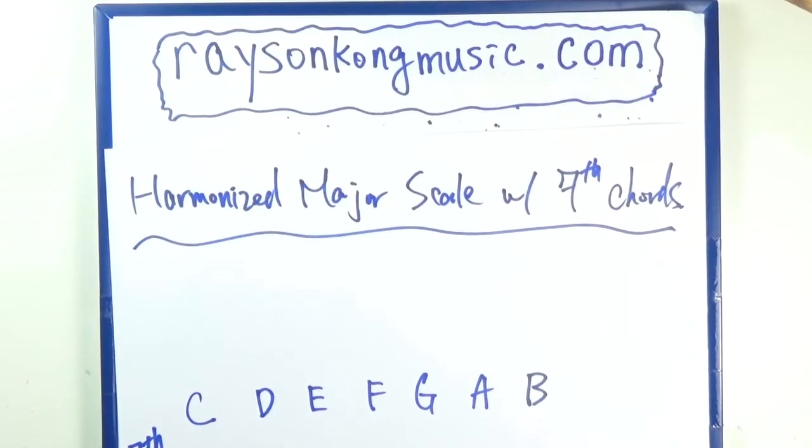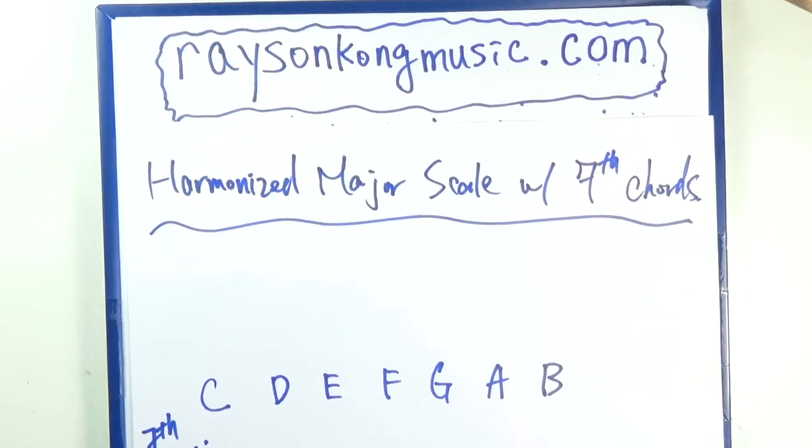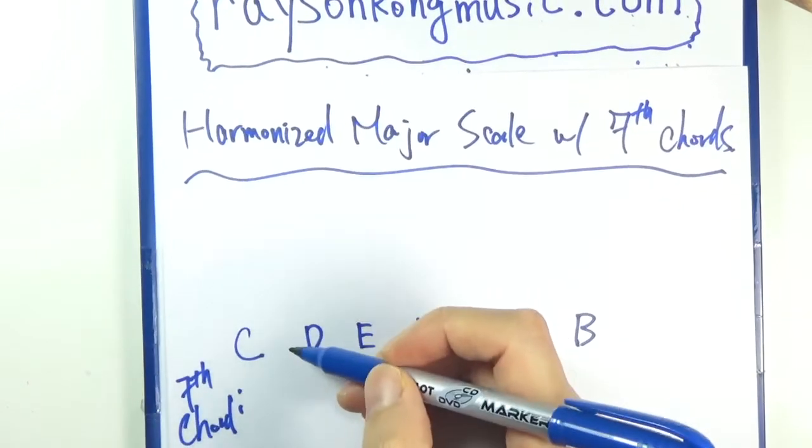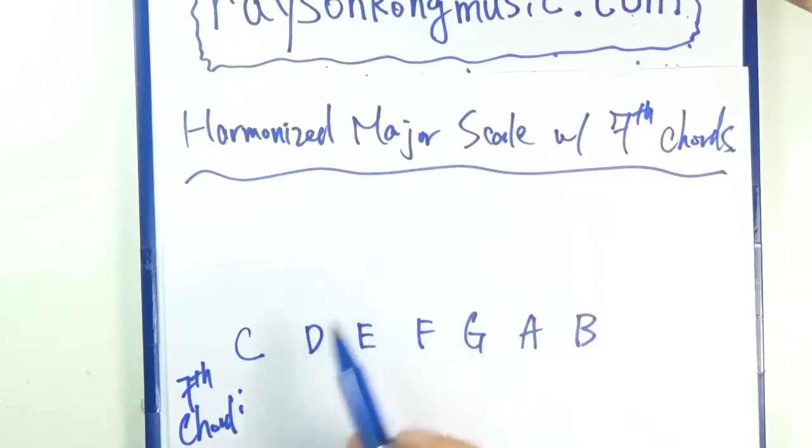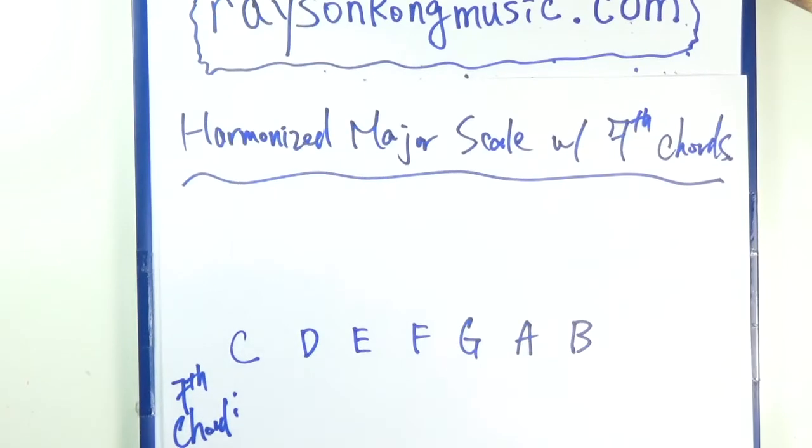In this video we're going to talk about harmonized major scale, but this time with seventh chords. Make sure you're already familiar with the structures of various kinds of seventh chords. Assuming you are familiar with that, let's begin. Let's stack again in thirds, and we're going to stack diatonically. This time we will have four chord tones.